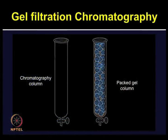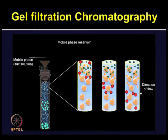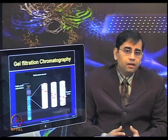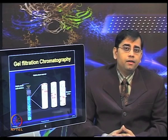The gel filtration column is composed of porous beads made from polyacrylamide, dextran, or agarose. These columns are packed with a hydrated porous gel matrix. The protein sample containing a mixture of unpurified proteins of different sizes is loaded onto the column. Beads of different pore sizes, or increasing retention time by adjusting column length or decreasing flow rate, can be adjusted to achieve higher resolution of proteins.